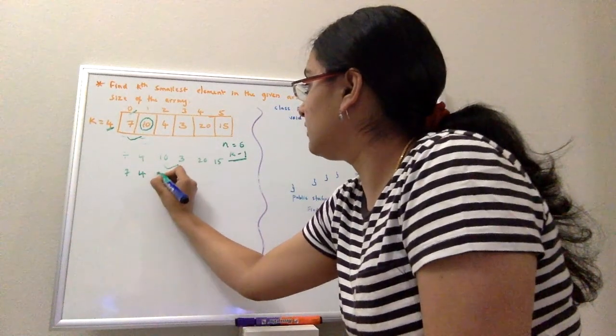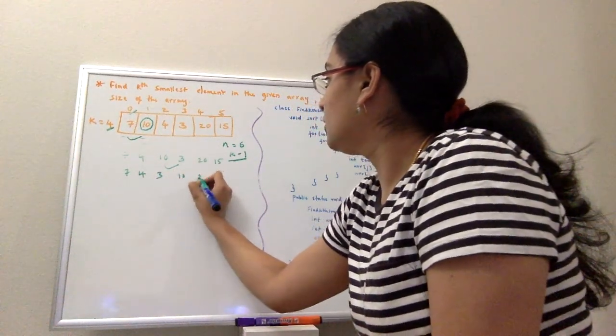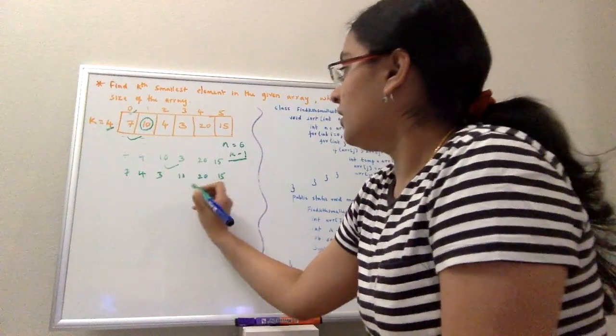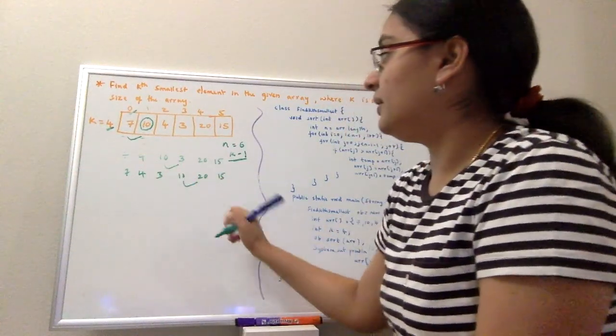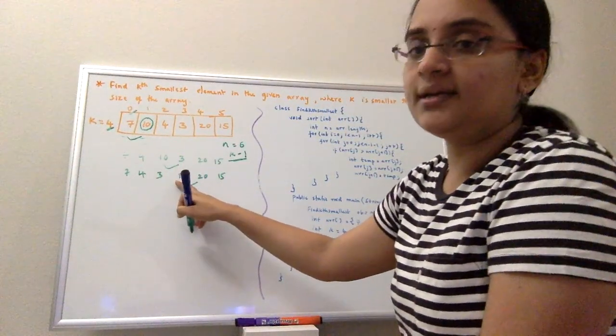So 7, 4, 3, 10, 20, and 15. When it comes to 10 and 20, 10 is not greater than 20, so I'll not do any swapping.